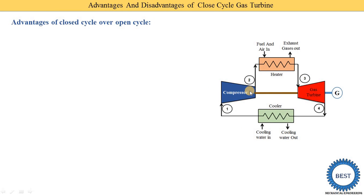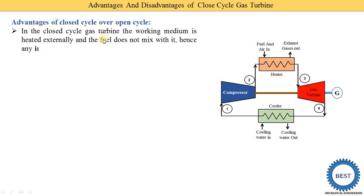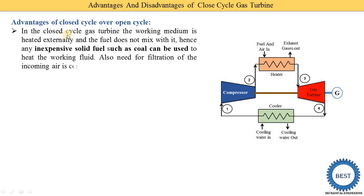Here is the image of a closed cycle gas turbine power plant. The first advantage is that in the closed cycle gas turbine, the working medium is heated externally. Here you can see in this heater, the working medium coming from the compressor is passed through this tube, and outside the tube the combustion of the fuel is carried out. It is called externally heated because the fuel and the working substance are not mixed.